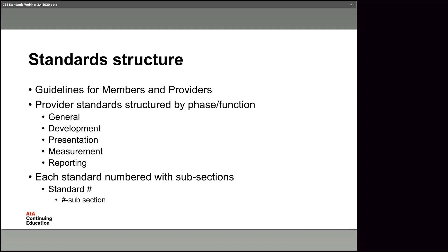For example, standard 14 covers marketing and other descriptive materials. Under that, standard 1401 covers disclosing significant features of a program in advance, standard 1402 covers what learners need to know before the class, and standard 1403 covers how you can state that the course carries AIA continuing education credit. We put that numbering system in place so that we can quickly point you to where information is, rather than telling you to look at a specific page number that might differ across versions.